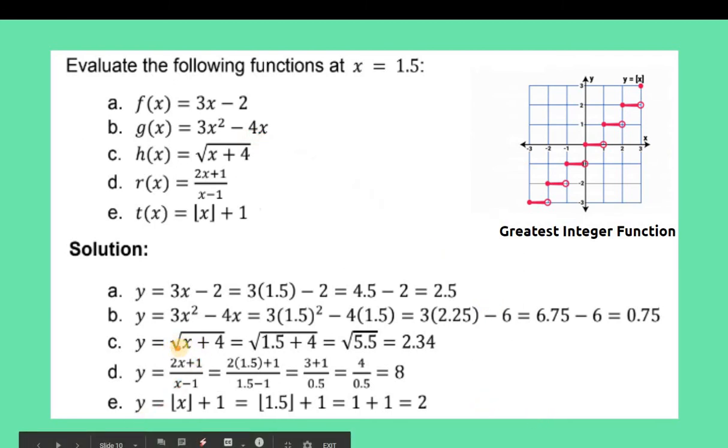For number 3, square root of x plus 4. So square root of x, where x is 1.5 plus 4. So 1.5 plus 4 equals square root of 5.5. You proceed with the square root operation, you have 2.34.